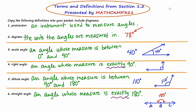Sometimes a student will see an angle and confusion arises because they're not sure how to think about it. Is the angle the one they should perceive here, or the other way around? We'll call one option two in red and the purple option option one.